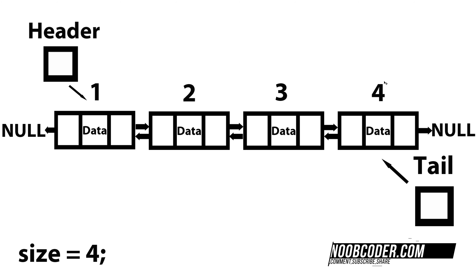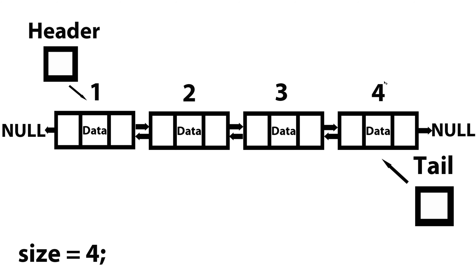Let's go over case one: whether or not we're getting a valid position. So let's say I call the remove at method and the position is zero. Well, zero is less than one, and one is our starting position, so anything less than one will be considered an invalid position. In that case, all I'm going to do is just return. Another example of an invalid position is position five, which doesn't exist because four is our last node. We could check if the position is greater than the size, because size keeps track of the number of nodes in our list. That is also an invalid position, and all we're going to do is return.